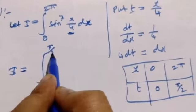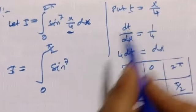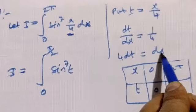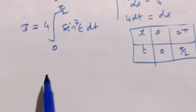I equals integral, substituting: sin power 7 of t, times 4 dt.